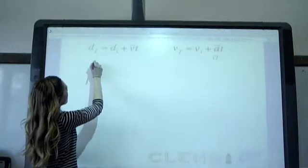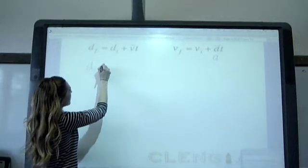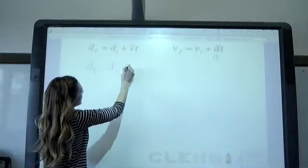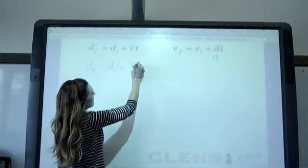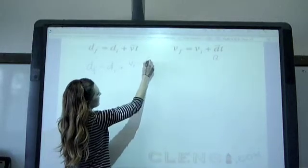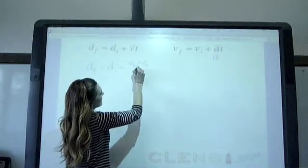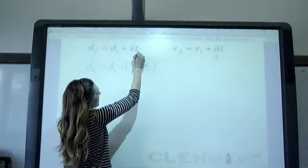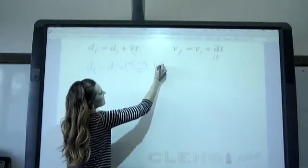so we use the fact that average velocity is really going to be the initial velocity plus the final velocity divided by 2. So we plug that part in, the average velocity, into this equation.